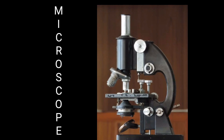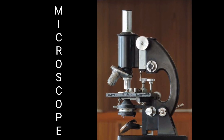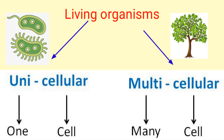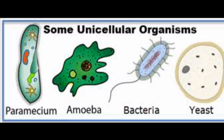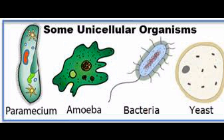They can be seen only through a microscope. The picture which you are seeing is a compound microscope. Depending upon the number of cells, it can be classified into two groups — unicellular or multicellular. Now you can see the pictures of bacteria, amoeba, yeast, etc. They all belong to unicellular because their body is made up of only one cell.